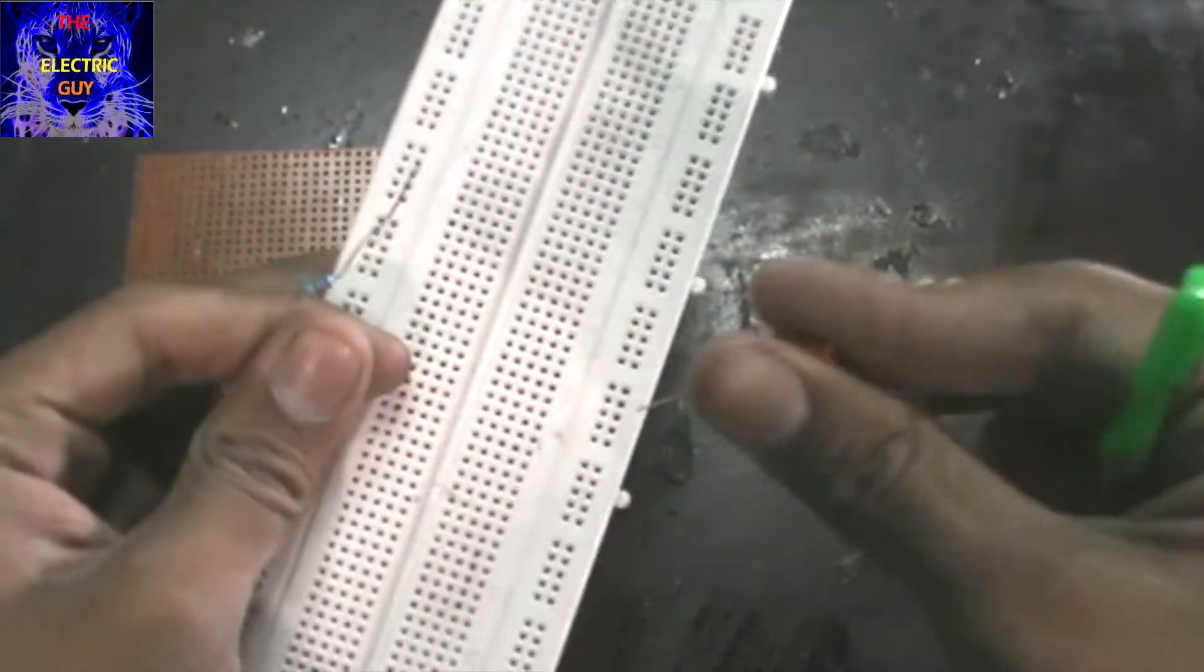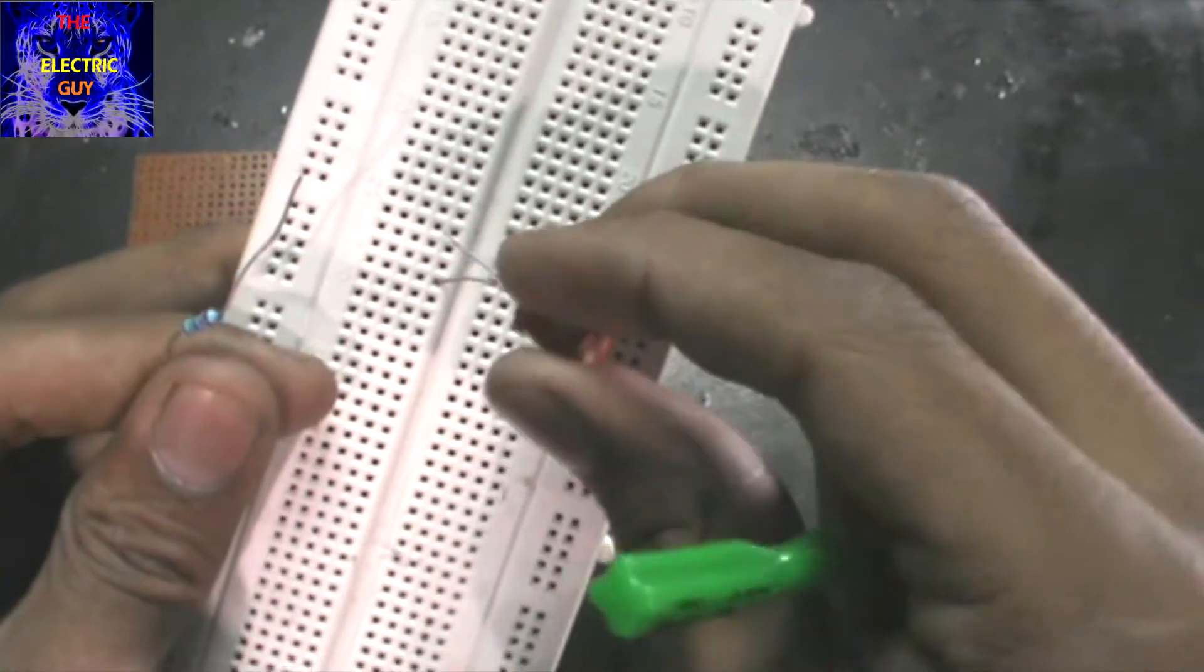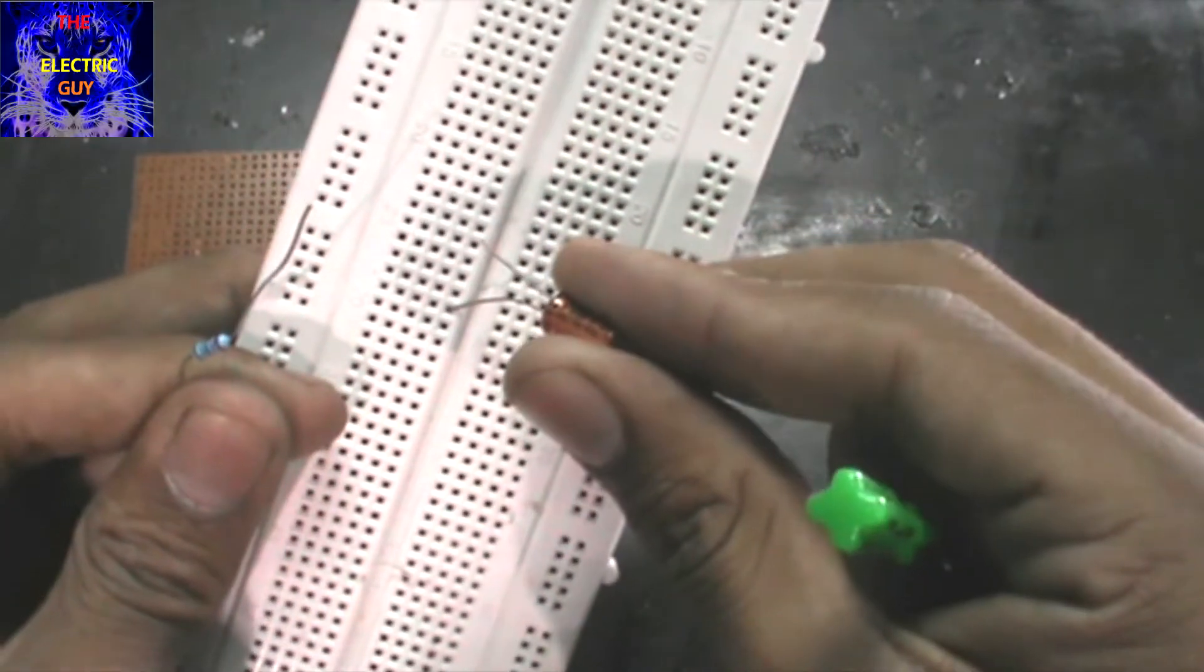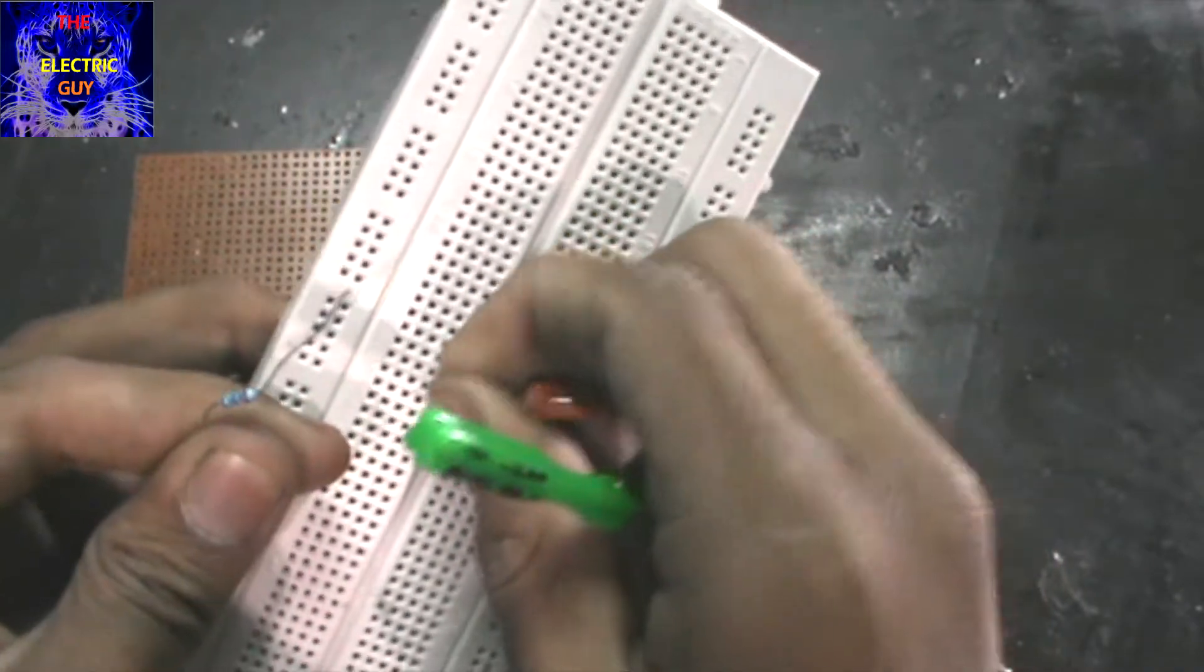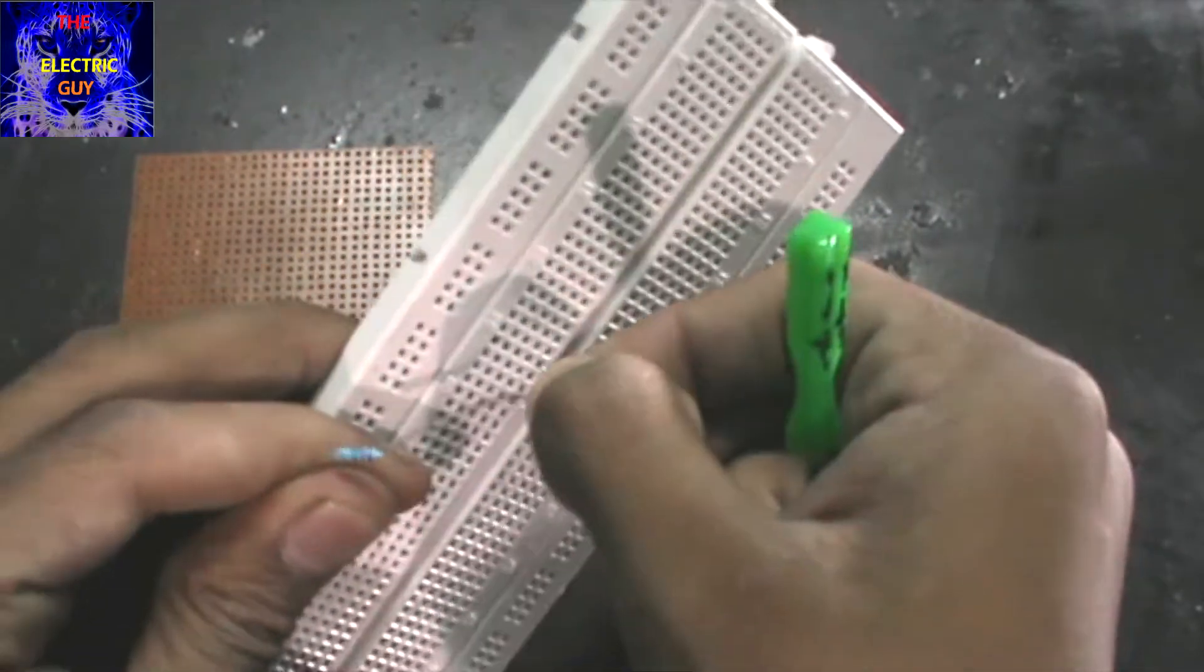To connect it, you have to connect one point of the capacitor to one rail, the other to another point of the rail.